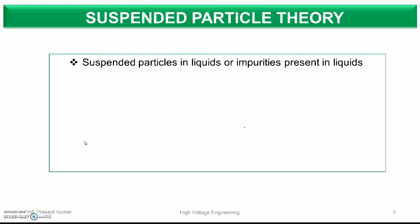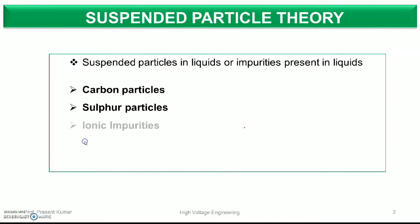Bhoot saray reasons hotay hain jis ke wajay se liquid electric material mein impurities add ho jaati hain, aur bhoot saray type ki impurities hotay hain. Kuch common impurities mein carbon particles hain jo generally liquid electric material mein dissolve ho jaate hain, sulfur particles hain, kuch ionic impurities hoti hain jo generally us mein dissolve ho jaati hain ya phir uske surface pe bhi develop ho jaati hain. Moisture in the form of water droplets and water vapor — yeh kaafi common impurity hai liquid electric material ki. Jab bhi temperature difference create hota hai, kisi bhi type ka moisture create hota hai, toh moisture ke wajay se water droplets ban jaate hain, water vapor ban jaate hain, jis ki dielectric strength kaafi weaker hoti hai as compared to the dielectric strength of liquid electric material.